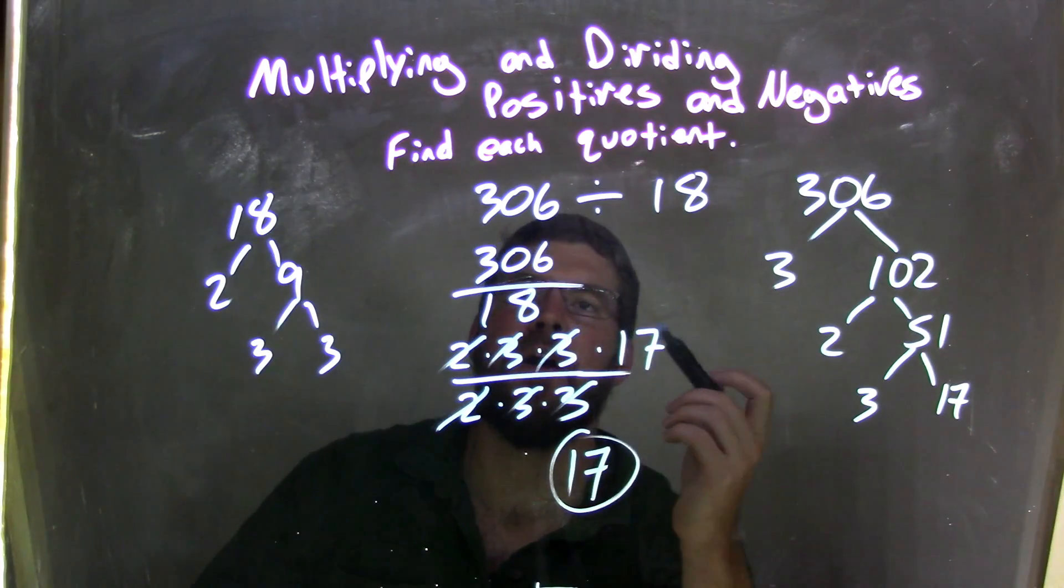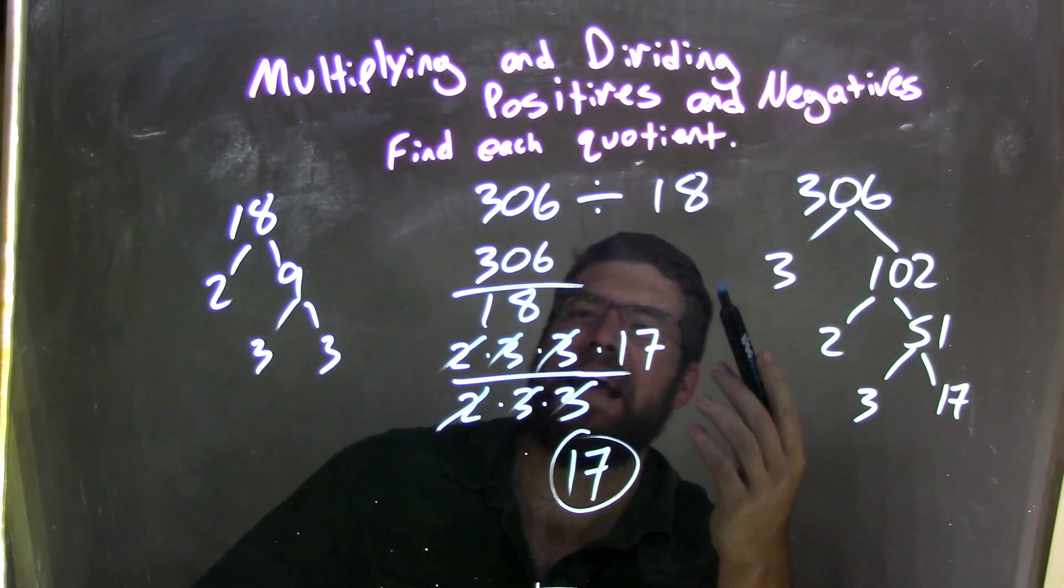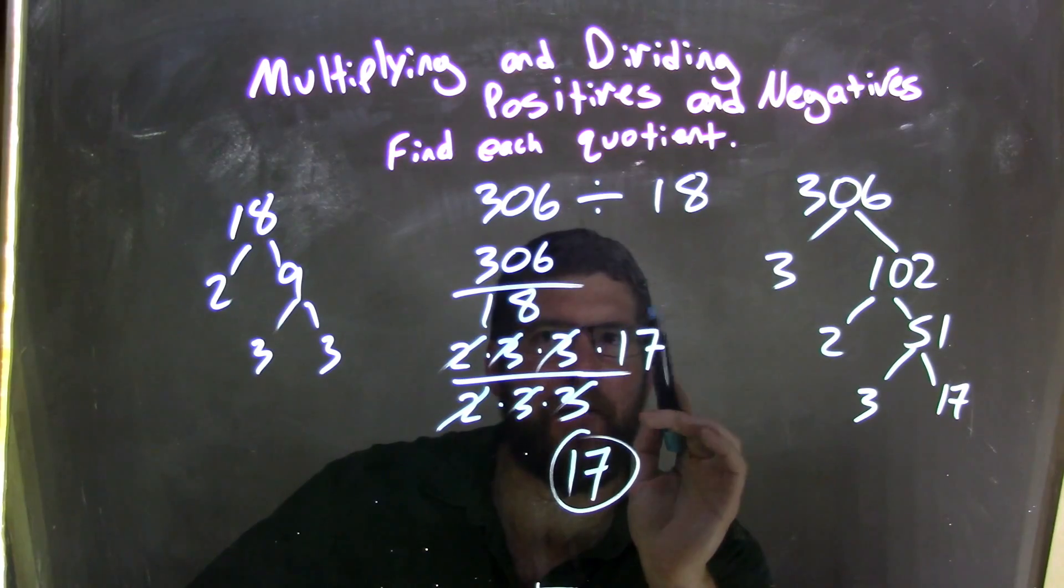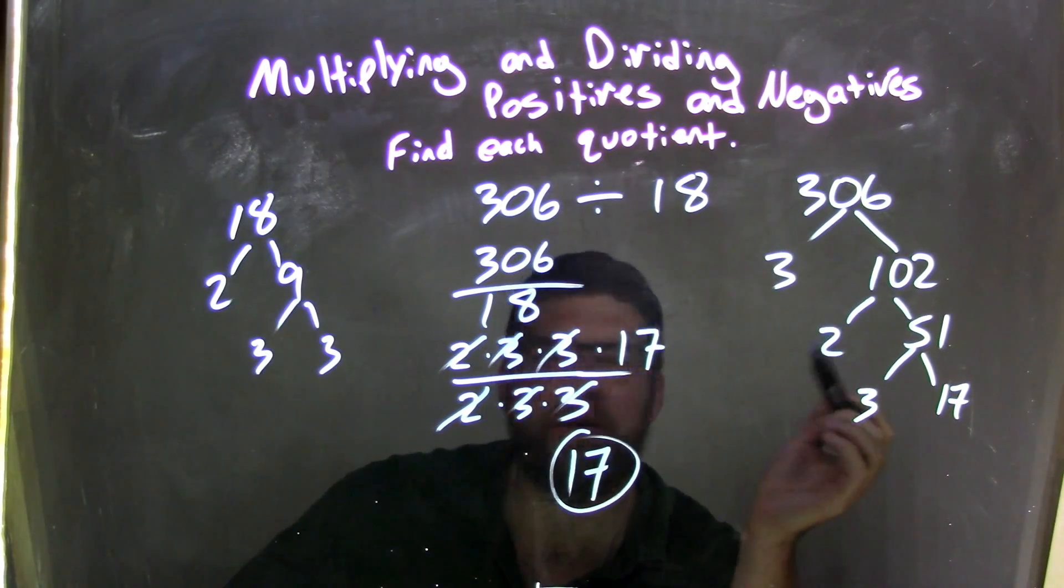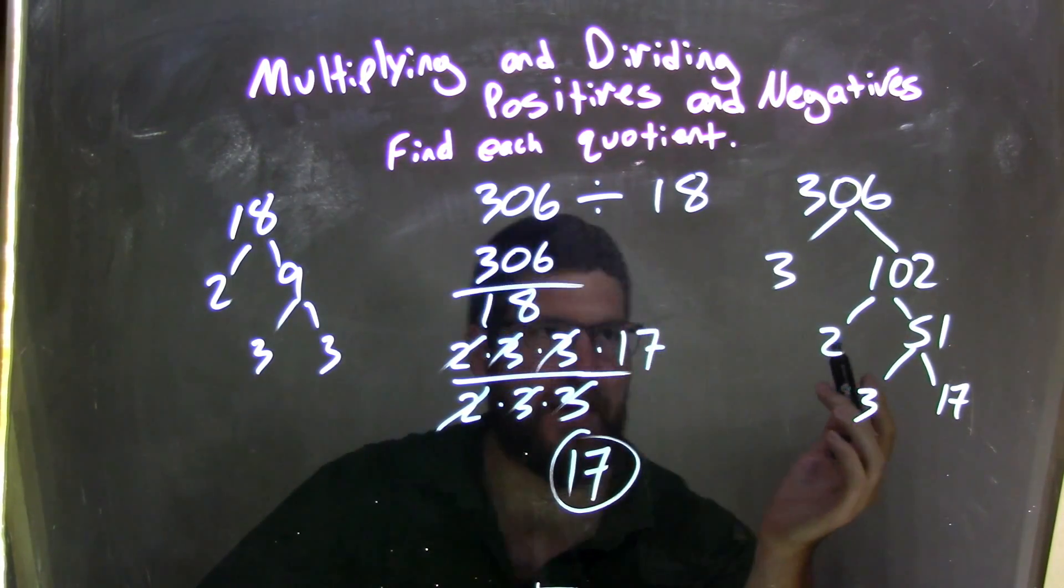So, again, let's recap. We started with 306 divided by 18. I rewrote that as a fraction because I like to see it that way. 306, I had no clue, so I started just breaking it down prime factorization.